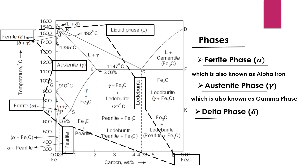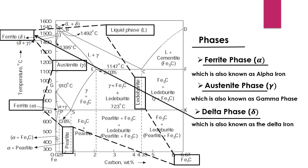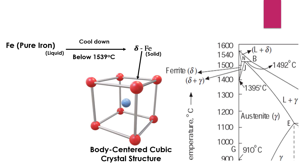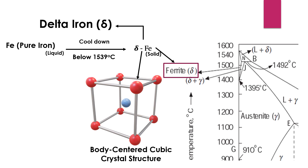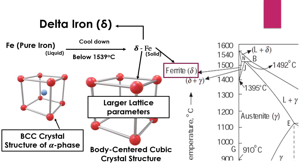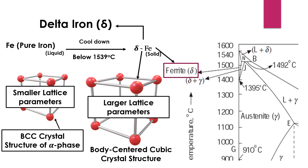Now let's have a look at the delta phase, also known as delta iron. If we slowly cool down pure iron below its melting point, it will crystallize into a phase with a body-centered cubic crystal structure, known as delta iron. The BCC crystal structure of this delta phase is different from the BCC crystal structure of the alpha phase at room temperature, because the delta phase has larger lattice parameters compared to the ferrite phase.